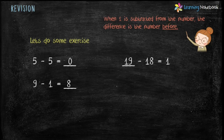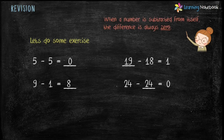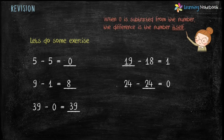Next: 24 minus ___ equals 0. The answer is 24, because when a number is subtracted from itself, the difference is always 0. Next: 39 minus 0 equals ___. The answer is 39, because when 0 is subtracted from a number, the difference is the number itself.